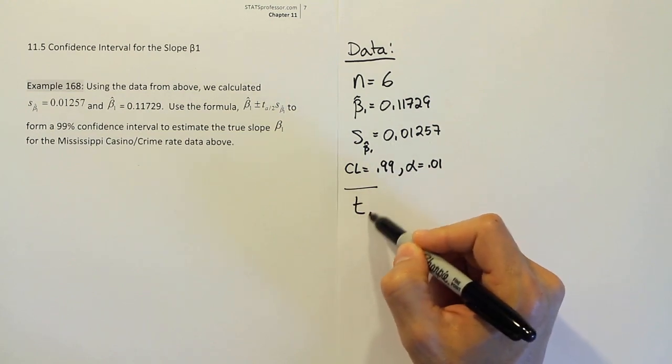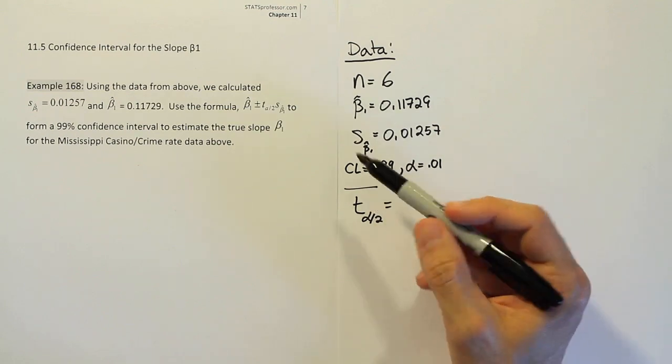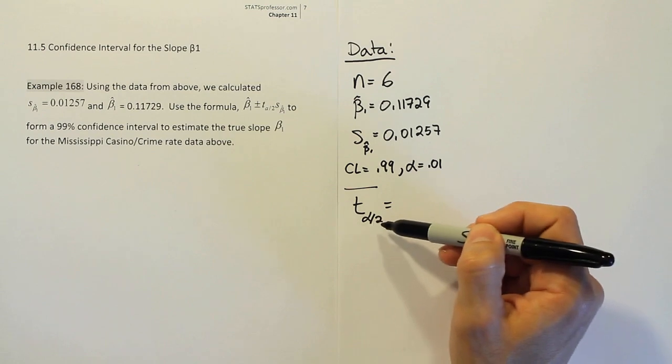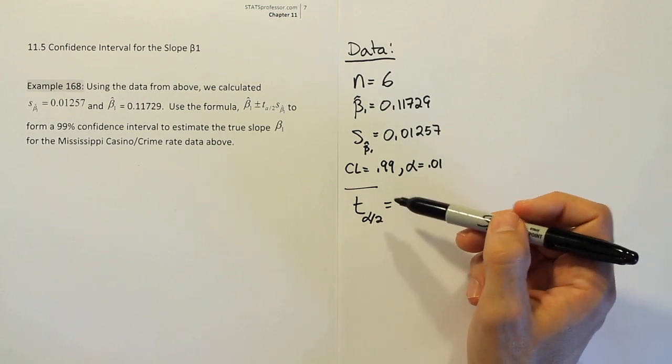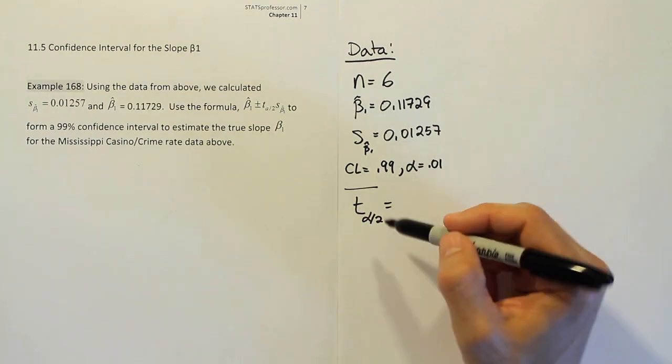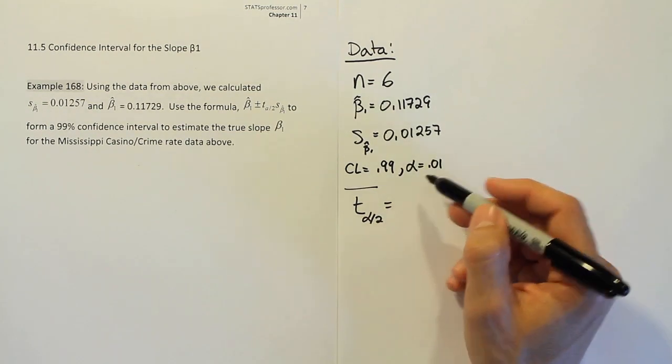Now it will be a t alpha divided by 2. So why is it t? Well because the sample size is small. And alpha divided by 2 is the traditional method we use in this course for forming a confidence interval. You can see the formula asks us for t alpha divided by 2. So once we have that, we're going to do the alpha divided in half.